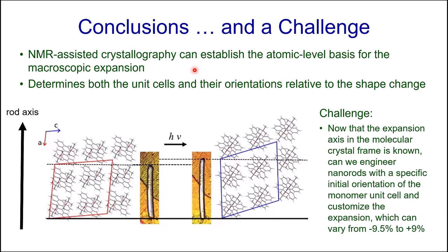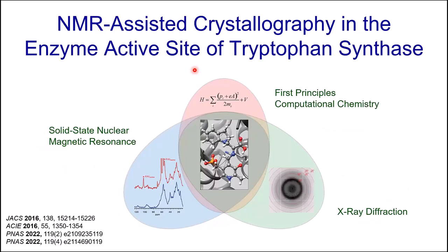I also want to give a flavor for how we're using NMR crystallography in a very different system: the enzyme active site of tryptophan synthase. The goal is to understand the enzymatic transformation of substrate to product at the atomic level — how every atom is moving including the hydrogens. We use an integrated combination of techniques spanning different length scales. For example, X-ray diffraction gives outstanding global structural information about the proximity of acid-base groups to the active site, but comes without hydrogen atoms — a real drawback when trying to understand acid-base catalysis.